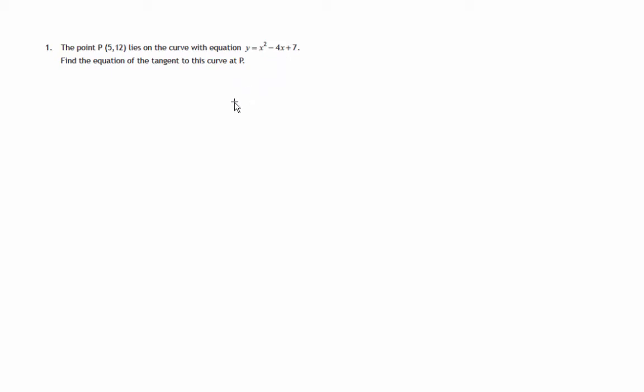and we're asked to find the equation of the tangent to this curve. So what's typical here is that some point, in this case (5,12), is on the tangent to that curve, and we're asked for its equation. Now to find the equation of a line, we need to know a point on it and its gradient.